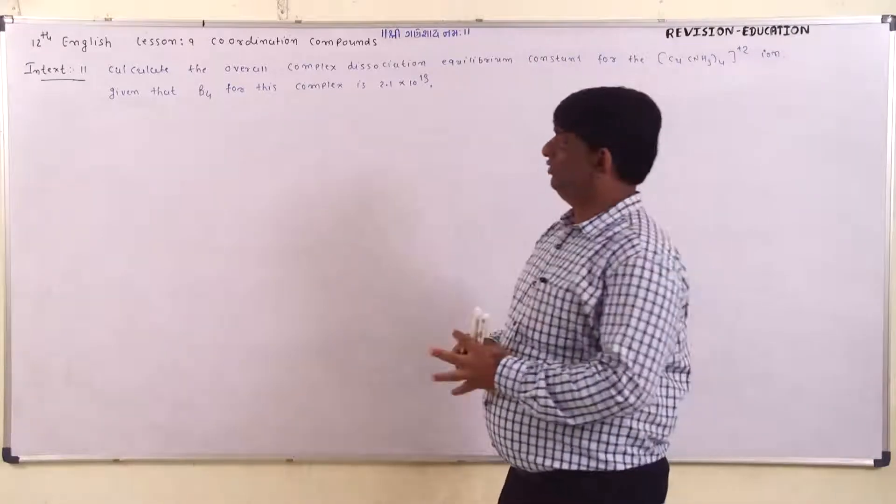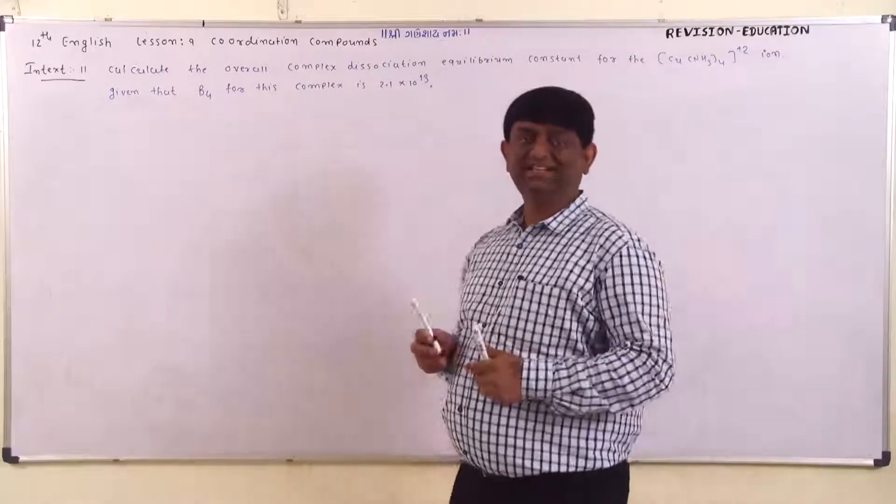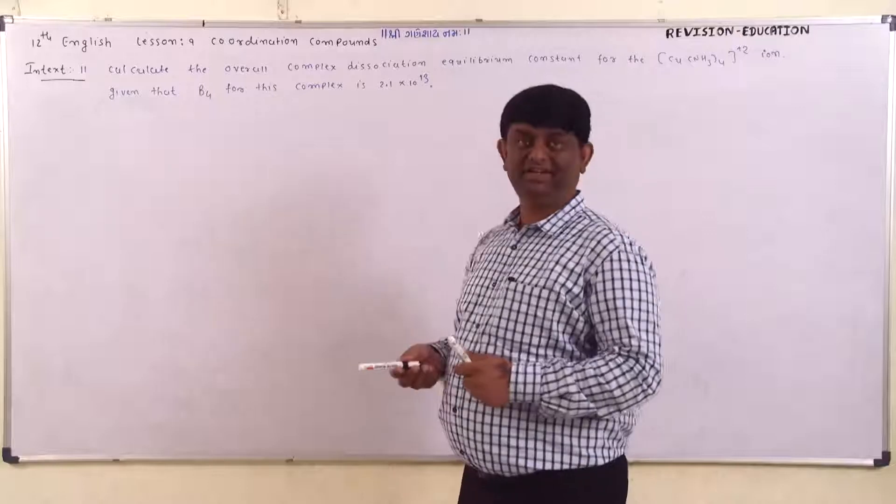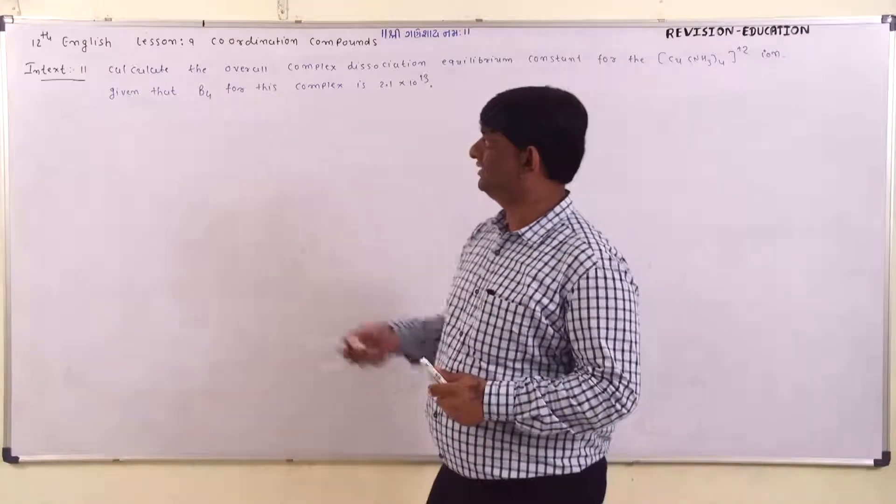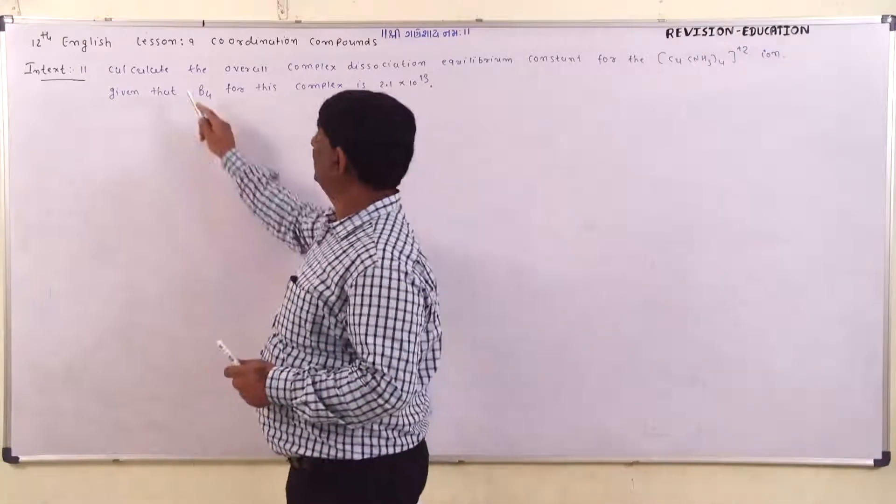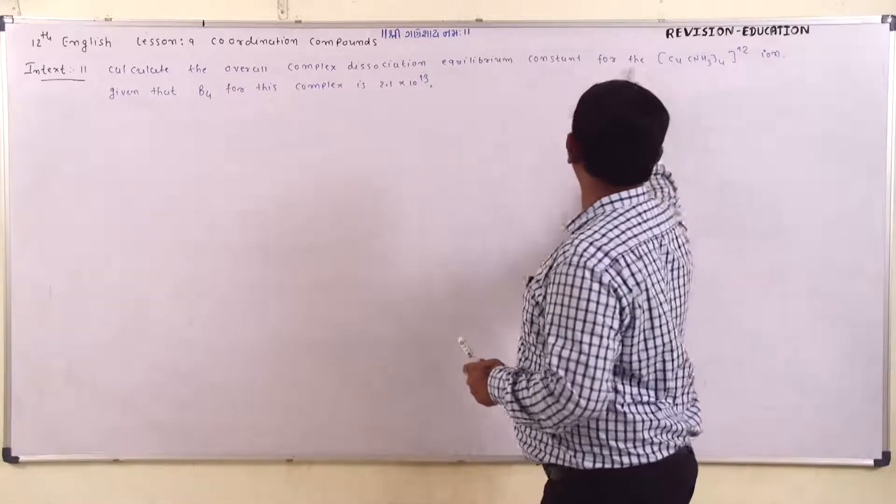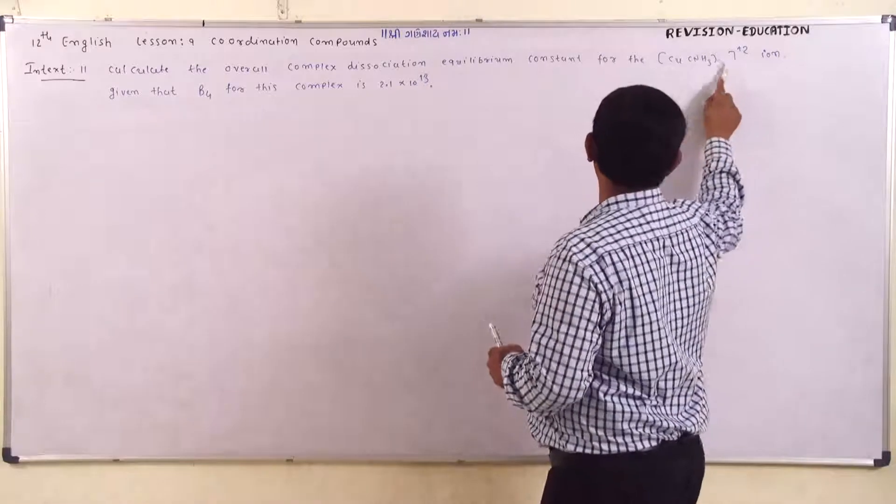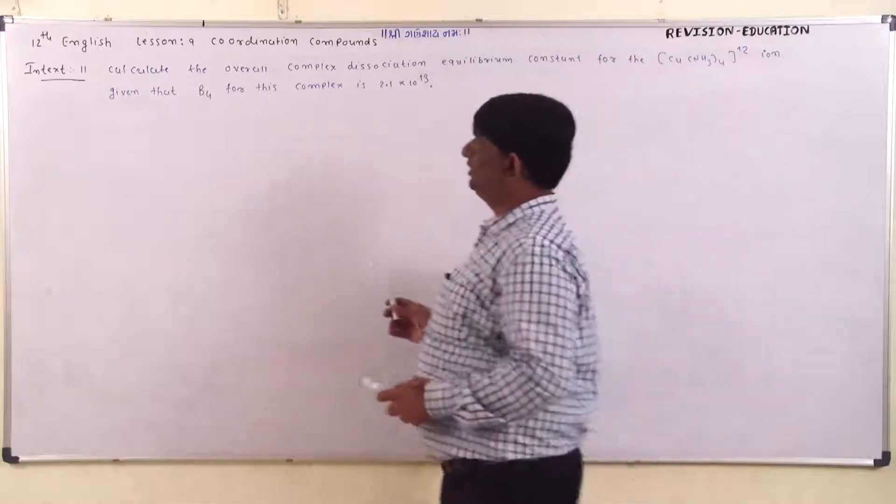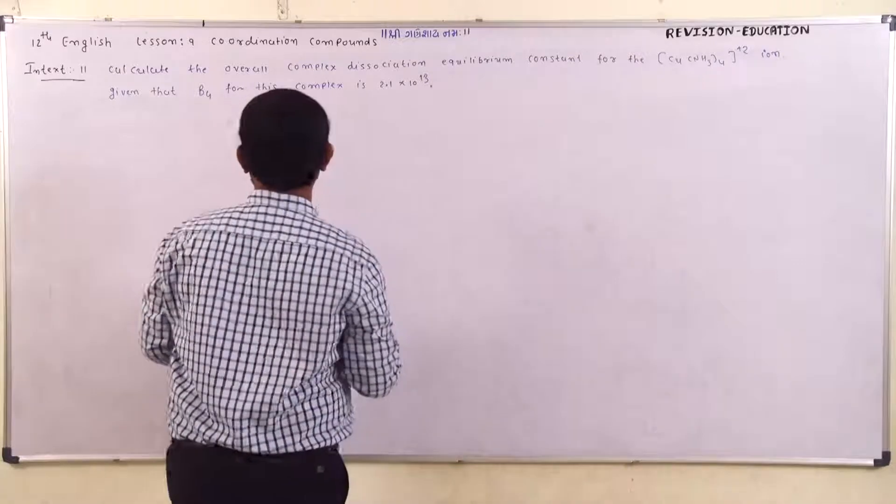Okay students, now we have discussed the last index question of Lesson 9 on Coordination Complexes. The index question is: Calculate the overall complex dissociation equilibrium constant for Cu(NH₃)₄²⁺, given that β₄ for the complex is 2.1 × 10¹³.